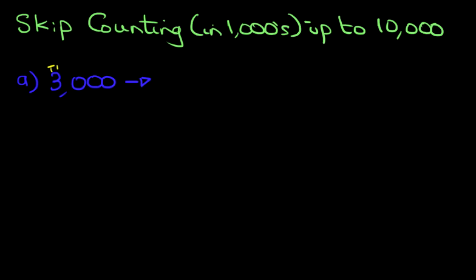First, find the thousands column. We've got a 3, we're counting in thousands, so add 1. It becomes 4,000.